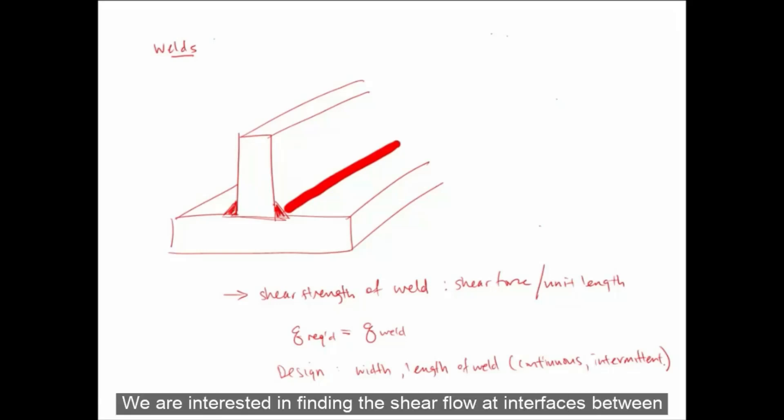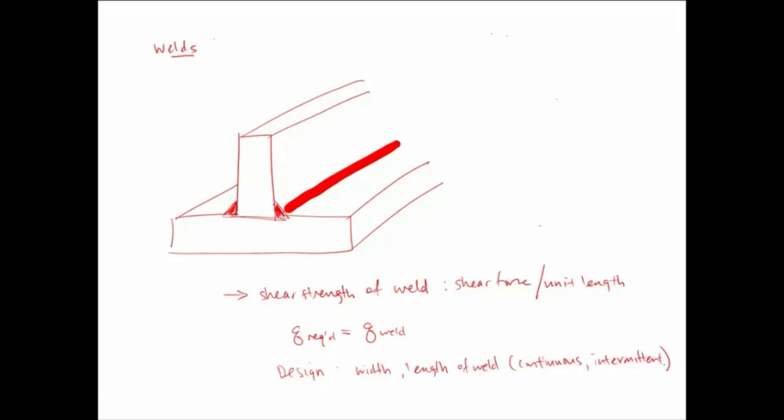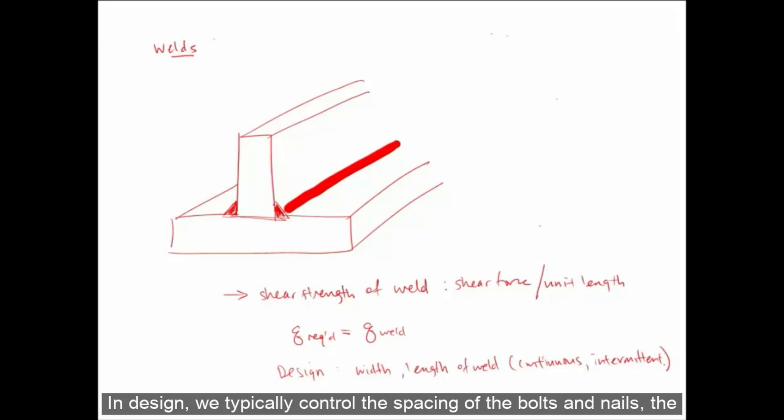We are interested in finding the shear flow at interfaces between components of a built-up member. This is because our bonding agent, whether it be nails or bolts, glue or welds, must be designed to resist the shear flow. In design, we typically control the spacing of the bolts and nails, the width of the glued area, or the width and length of the welds.